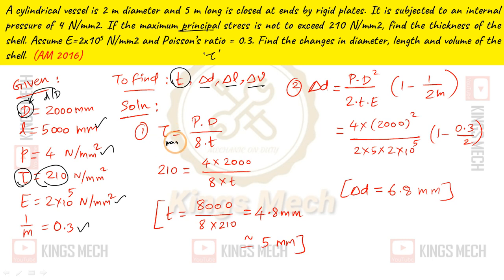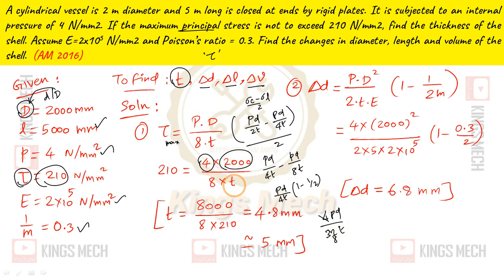So τ_max = PD/8t, which is circumferential stress minus longitudinal stress divided by 2. So PD/2t minus PD/4t divided by 2. Then PD/4t minus PD/8t. If you work it out: PD/4t × (1 - 1/2). This becomes 4PD/32t, which equals PD/8t. So PD/8t, with P = 4, diameter 2000, 8 into thickness.